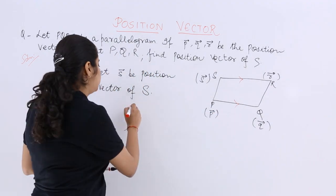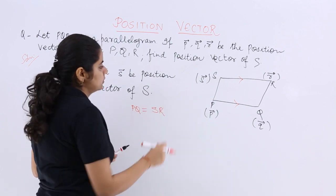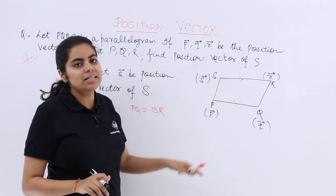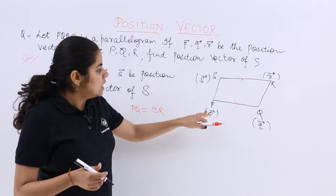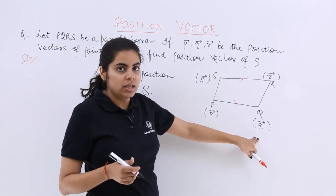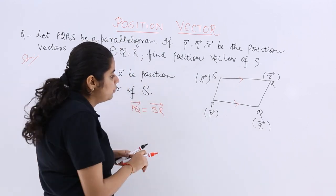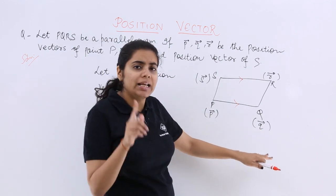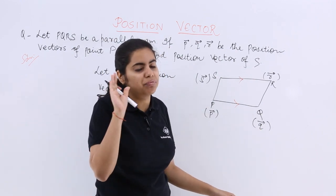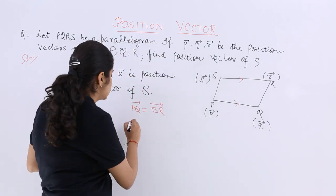In a parallelogram, opposite sides are equal and parallel, so PQ equals SR. In terms of position vectors, PQ equals final minus initial, which is q minus p. Remember this formula: final minus initial.